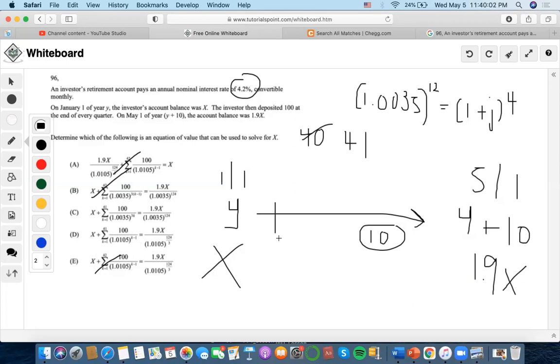But I do know that the quarterly payment is still 0.0105%. So I'm looking here and I noticed, so 0.010536, right? Now I'm looking at this one and I noticed, hey, I could do 1.0035 to the 24th.